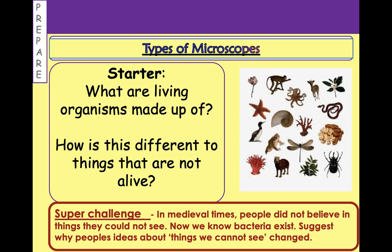Well done with those two. If you had a go at the super challenge — fantastic. It says that in medieval times, people did not believe in things they couldn't see, and if you did, people thought you were a little bit mad. But now we know there are things all around us that we can't see. We know bacteria exist. It was evidence that helped convince people, particularly things like infectious diseases. We know bacteria and viruses are all around us. Also, technology — we invented technology that allowed us to start to see some of these things, and it can always get better.